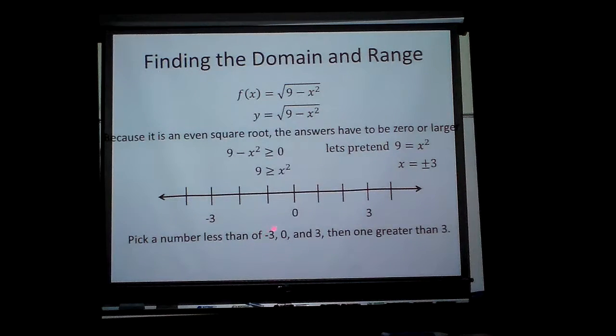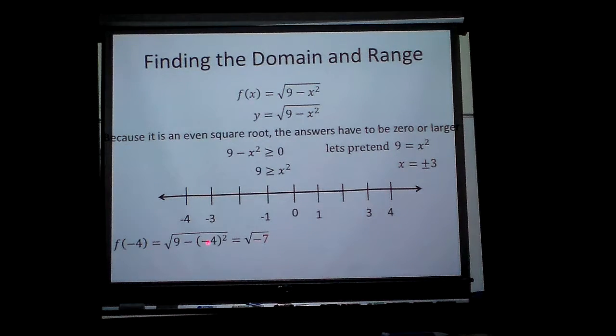I pick a number less than negative 3 and test it. So first off, let's look at the numbers I'm going to pick to use. If I plug negative 4 into the problem, negative 4 squared is 16. 9 minus 16 makes negative 7, so it's not possible. So I know it's not going to be outside there.